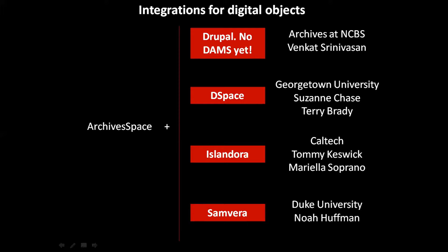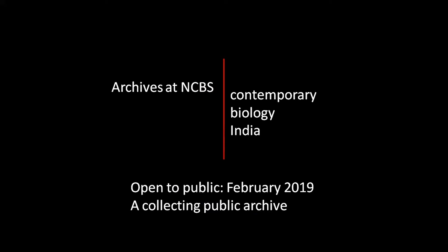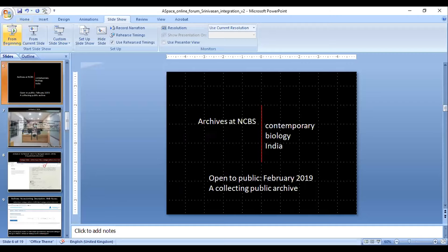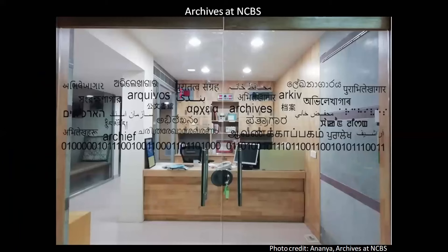A quick background: the archives at the National Center for Biological Sciences is a space for the history of contemporary biology in India. We just opened to the public a month ago, in February 2019, and we are a collecting public archive. We're very, very new — Columbia had talked about having 8,000 collections; we have 18. So we have a lot of catching up to do.